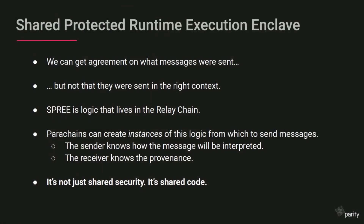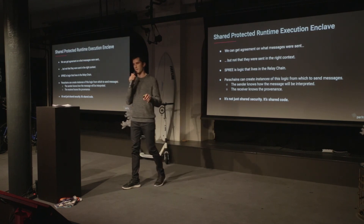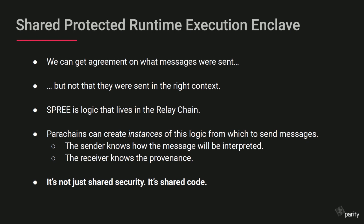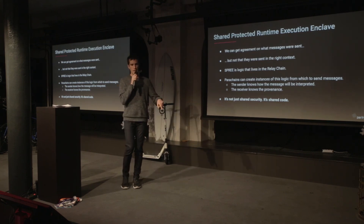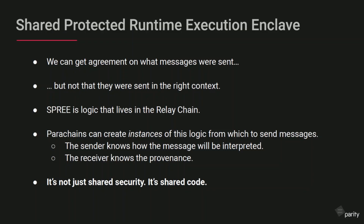So we came up with SPREE — a Shared Protected Runtime Execution Enclave. We can all agree on what messages were sent, but not always on what their context is. SPREE is basically a module that lives in the relay chain — you have one set of logic, but you can instantiate this logic anywhere else. If you create an instance of this logic, it has a hash, and you can verify that this logic is the same logic stored on the relay chain. It's actually optional — you don't have to use SPREE if you don't want to. When you send an interchain message, you'll have some kind of module attached to it, like 'I'm sending this to your balances module' or 'your governance module.' SPREE acts almost like a full node on your chain because SPREE will only talk to other SPREE instances, not to another module. So if you want to send one of these messages, the SPREE logic includes a proof that you actually executed what you say you've done, and it will only send your message to another SPREE module.